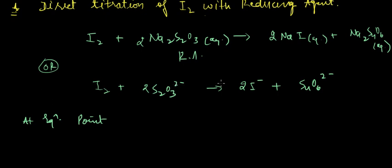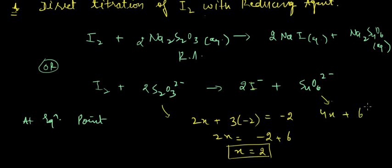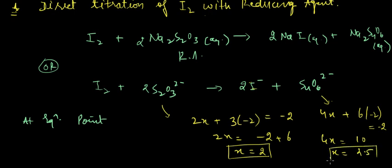To verify that sulfur is oxidized, let's calculate its oxidation state. In S₂O₃²⁻, let the oxidation state of sulfur be x: 2x + 3(−2) = −2, so 2x = +4, giving x = +2. In S₄O₆²⁻: 4x + 6(−2) = −2, so 4x = +10, giving x = +2.5. Since sulfur goes from +2 to +2.5, it is indeed oxidized.